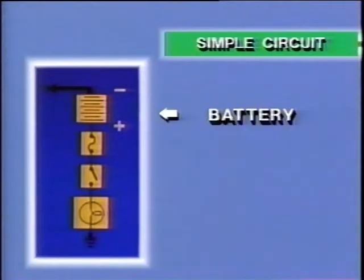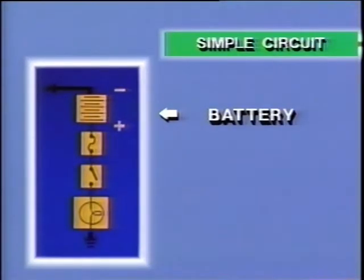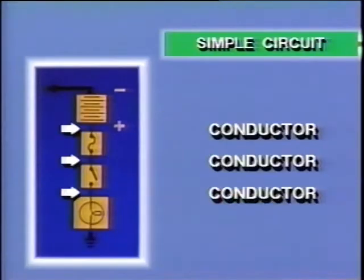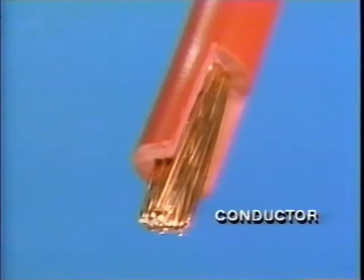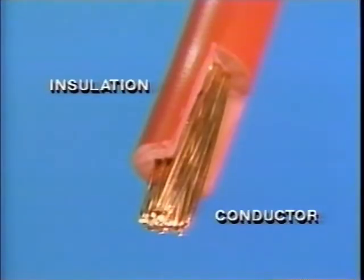The power source, the battery, in an automotive circuit is represented by this symbol. The battery produces electrical power, or electricity. Electricity moves through a conductor. Copper is an excellent conductor. The opposite of a conductor is an insulator. Insulation covers the wiring to keep electricity in the conductor.